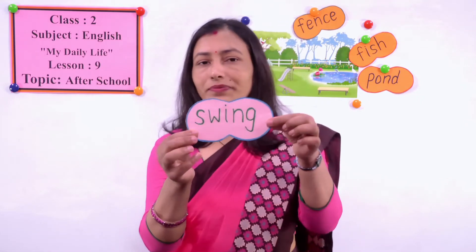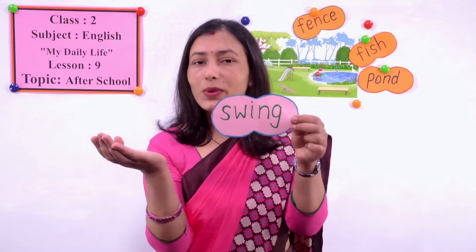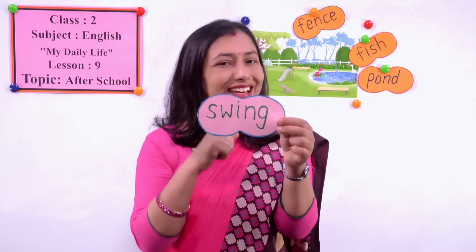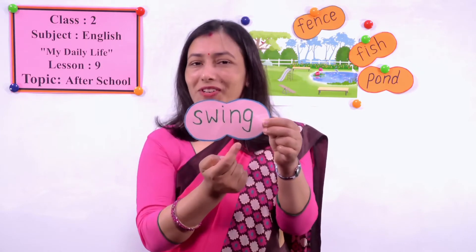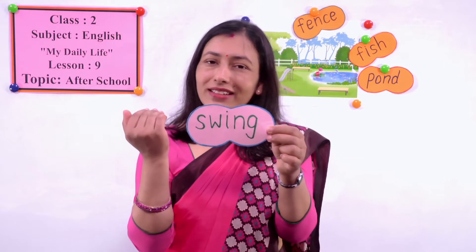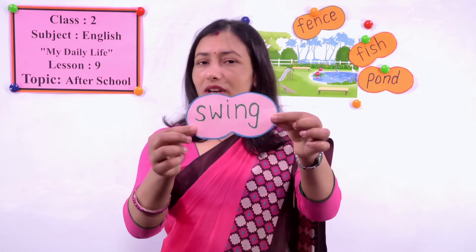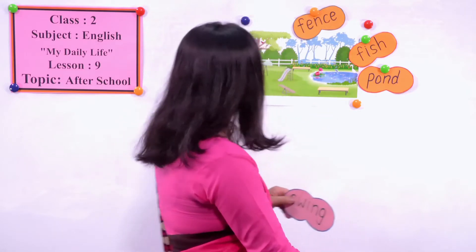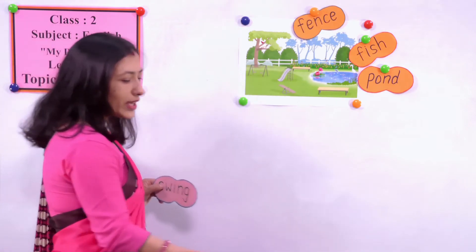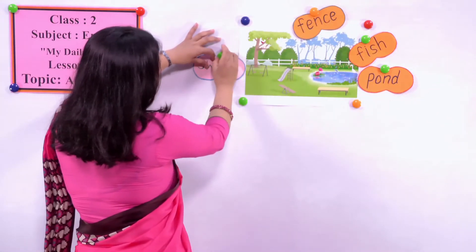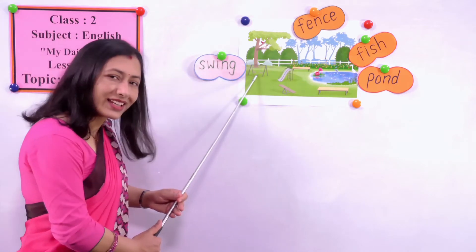Now look at another word. S-W-I-N-G. How do you read the word? That is our favourite game also, we play it. Do you like swing? You do, I know. Swing. Repeat after me: swing. One more time: swing. Read yourself. Now let's find out swing here. Point in your workbook - yes, here is a swing. N-S-W-I-N-G. Swing. Very good, dear student.